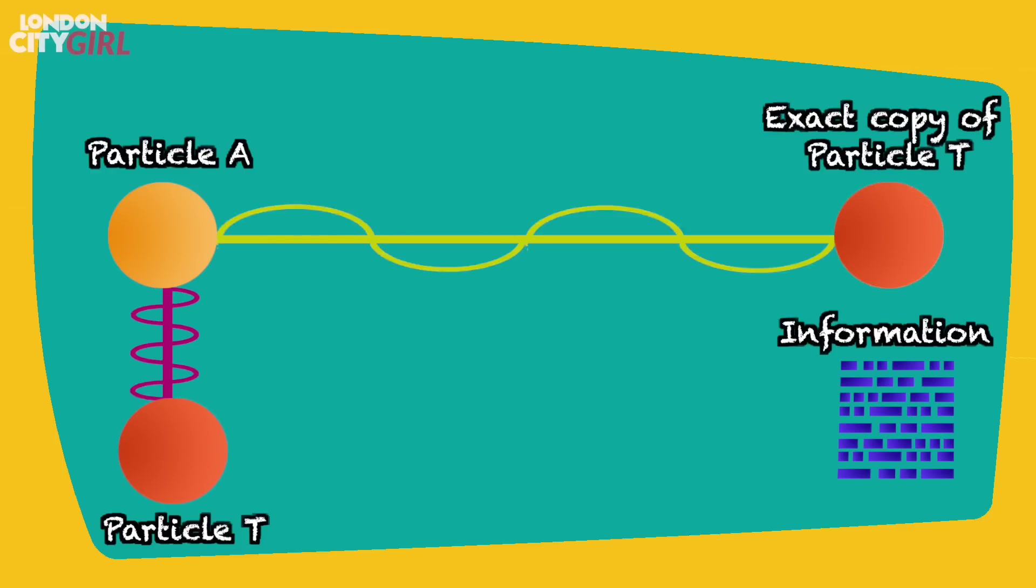Particle B will then be manipulated to replicate the quantum state of particle T, becoming an exact copy of particle T. Meanwhile, the original particle T is destroyed as its information was extracted and sent across.